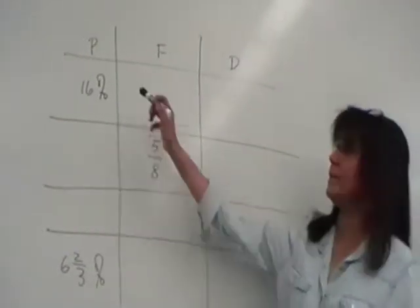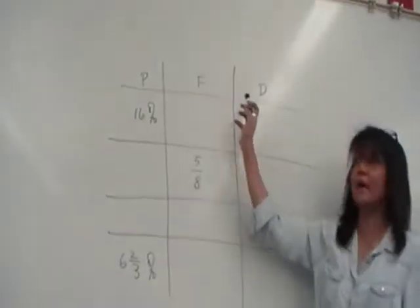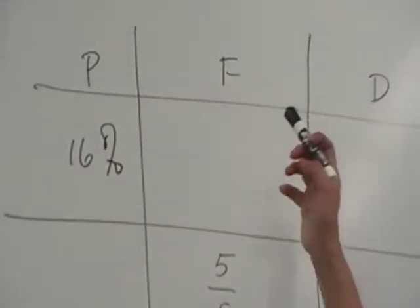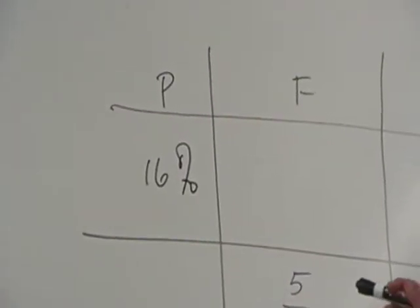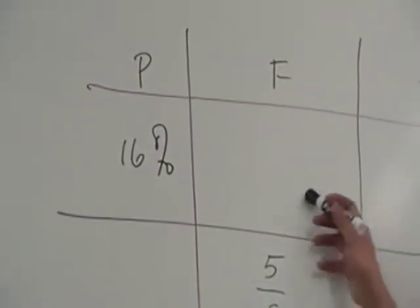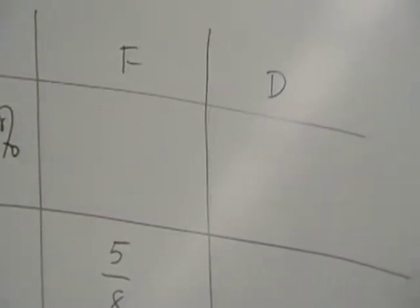Okay, so we have this chart. P stands for percent, F for fraction, and D for decimal. So I guess you understood what I wanted, even though I didn't put any instruction, right? Okay, so just write 16% as a fraction, and then as a decimal.